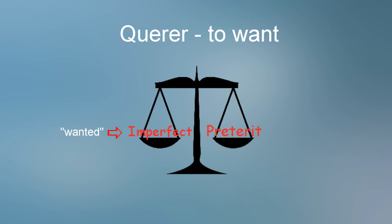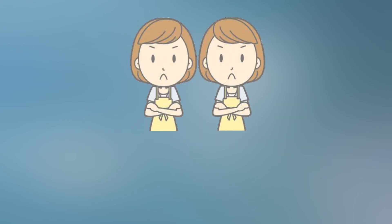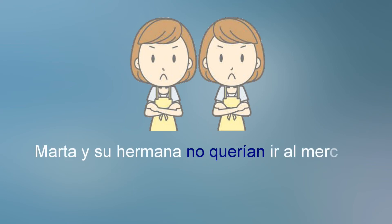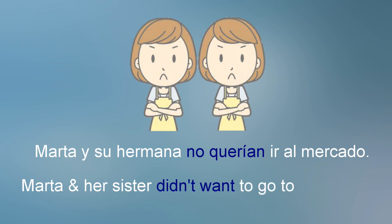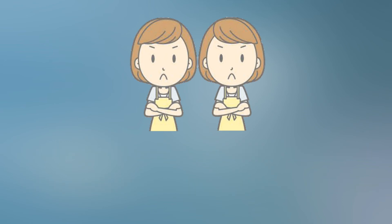It's not that the preterite of querer isn't used, but it can be tricky. One good example: Marta y su hermana no querían ir al mercado — Marta and her sister didn't want to go to the market. Pretty straightforward — a non-specific mental state.